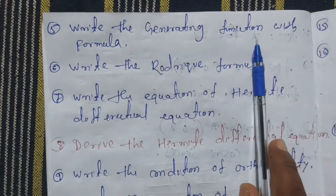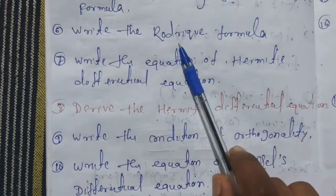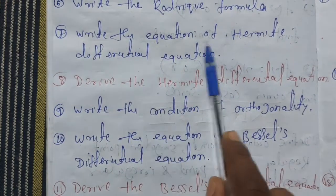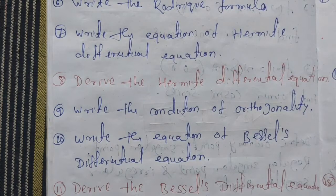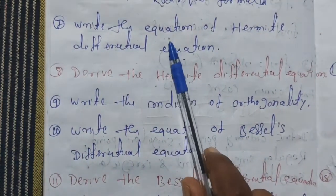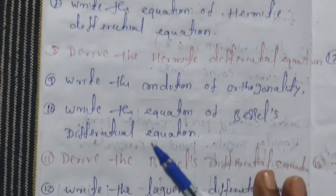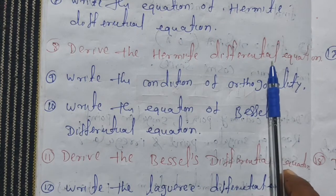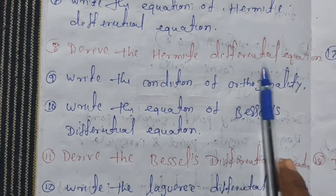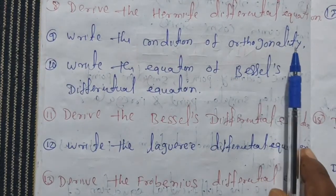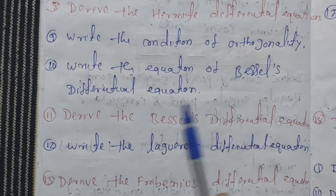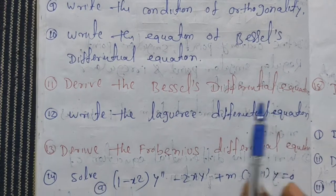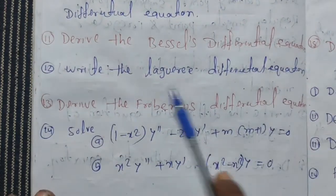Write the generating function with formula. Write the Rodrigues formula. Write the Hermite differential equation — derive it completely for 8 or 10 marks. Write the condition for orthogonality. Write the Bessel's differential equation and derive it. Write the Laguerre differential equation — this is a short question.